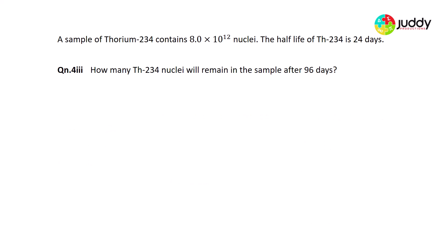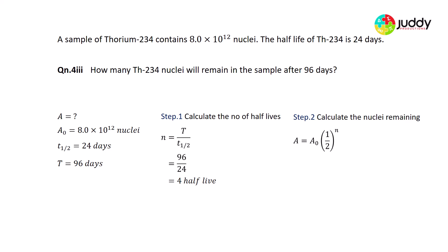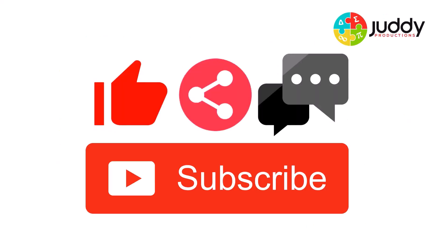Question 4.3: how many Thorium-234 nuclei remain after 96 days? The original amount is 8.0 × 10^12 nuclei; the half-life is 24 days. Step 1: number of half-lives = 96 ÷ 24 = 4. Step 2: nuclei remaining = 8.0 × 10^12 × (½)^4 = 8.0 × 10^12 × (1/16) = 5.0 × 10^11 nuclei.